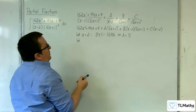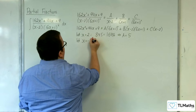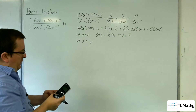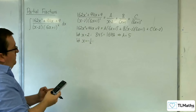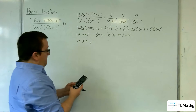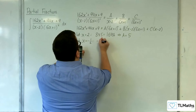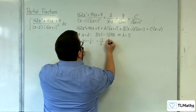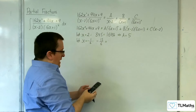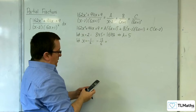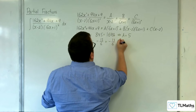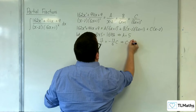The next value to substitute is x equals minus 1 sixth. On the left hand side we get 162 times (−1/6) squared plus 94 lots of (−1/6) plus 9, which gives minus 13 sixths. On the right hand side this knocks out the A and B brackets, leaving C times (−1/6 − 2), which is minus 13 sixths times C. So C must be equal to 1.